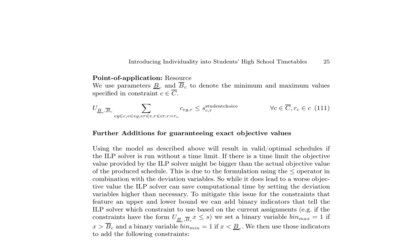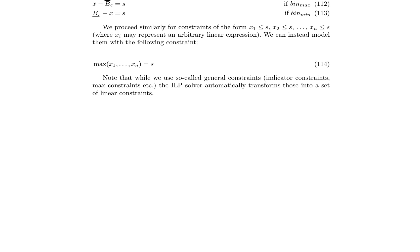The incorporation of individuality into students' high school timetables involves introducing parameters for minimum and maximum values and constraints, achieved through the use of parameters BC and BCT. The addition of binary indicators ensures that the ILP solver uses the appropriate constraints based on assignments, mitigating the issue of deviation variables. This approach allows for the creation of valid and optimal schedules while considering computational time, as accurately modeling constraints is crucial for achieving the best objective values.